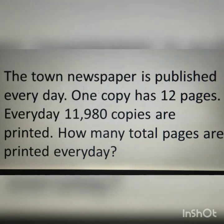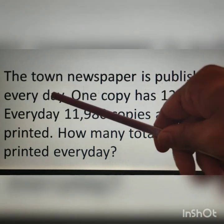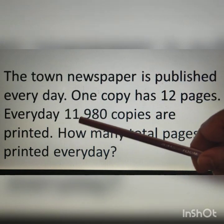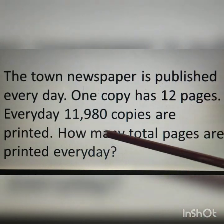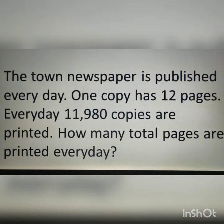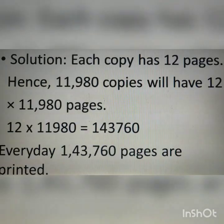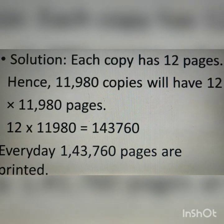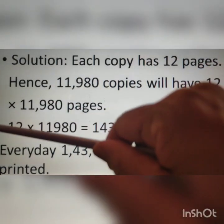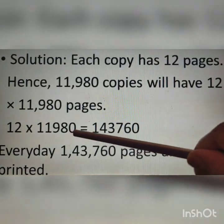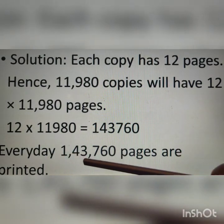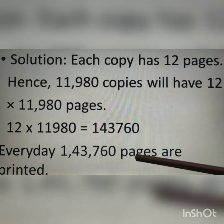Example number 2: The town newspaper is published every day. One copy has 12 pages. Every day, 11,980 copies are printed. How many total pages are printed every day? It is given that there are 11,980 copies and each copy has 12 pages. By multiplying 12 with 11,980, we will get the total number of pages. Therefore, every day 1,43,760 pages are printed.